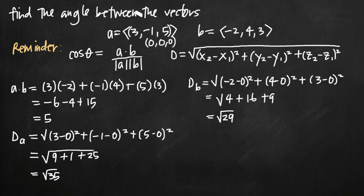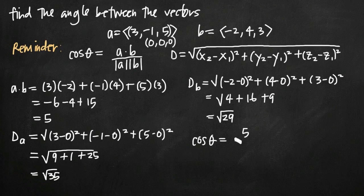Now to find the angle between the vectors, we set these values into our corollary formula. Cosine of theta equals our dot product, which is 5, divided by the length of a — which is square root of 35 — times the length of b — which is square root of 29.